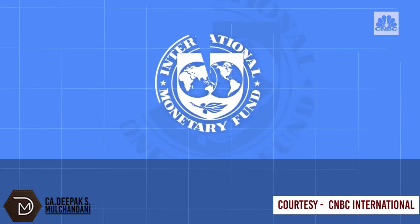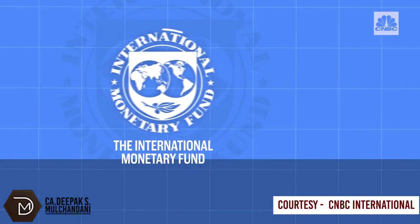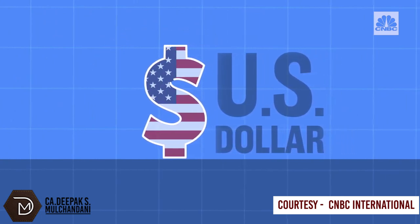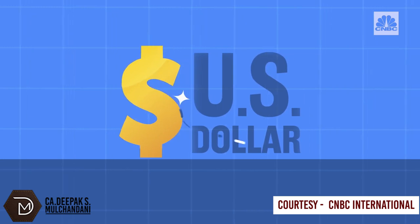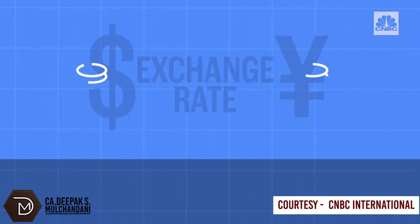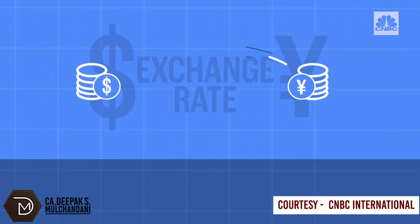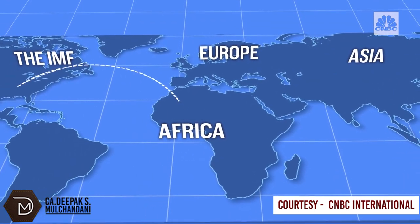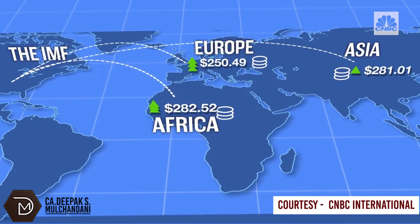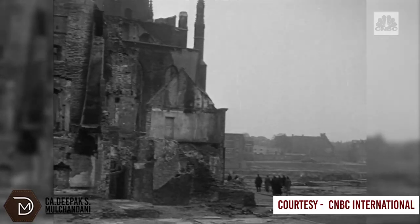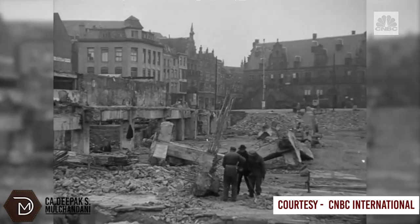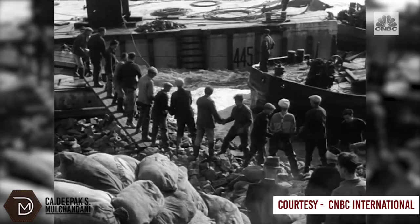Each institution was given a distinct role. The IMF's job was to oversee a system of fixed exchange rates, which tied the value of a country's currency to the U.S. dollar, which was pegged to gold. The main purpose of this was to make sure exchange rates stayed stable, to encourage global trade. The IMF was also tasked with providing short-term loans to countries struggling to pay their debts. Meanwhile, the main goal of the World Bank was to give financial assistance to countries, mainly in Europe, that needed to rebuild after the war.